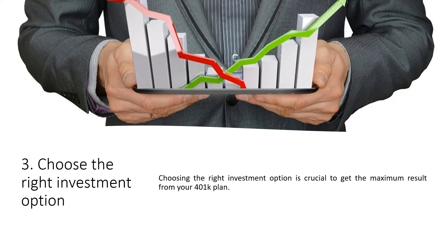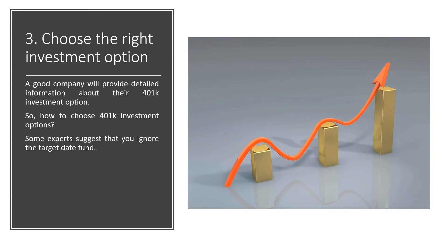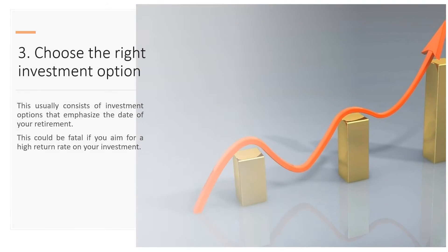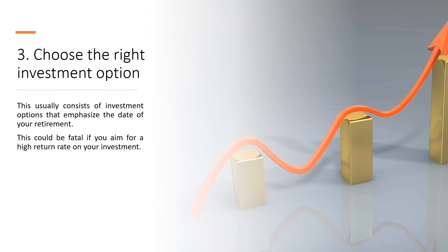3. Choose the Right Investment Option. Choosing the right investment option is crucial to get the maximum result from your 401k plan. A good company will provide detailed information about their 401k investment options. Some experts suggest that you ignore the target date fund. This usually consists of investment options that emphasize the date of your retirement, which could be fatal if you aim for a high return rate on your investment.